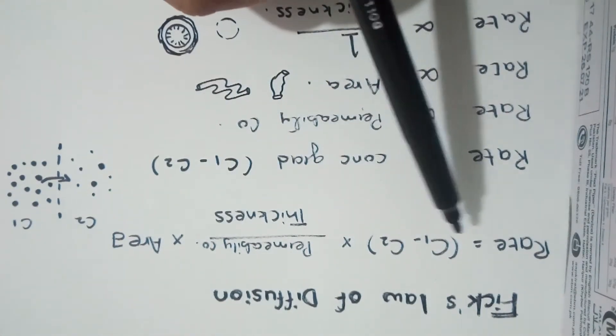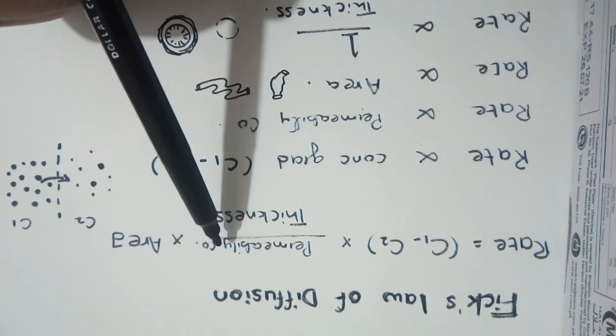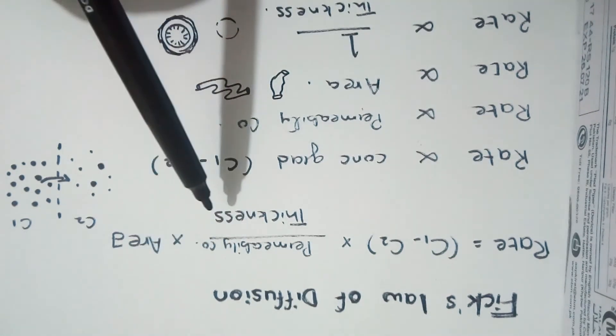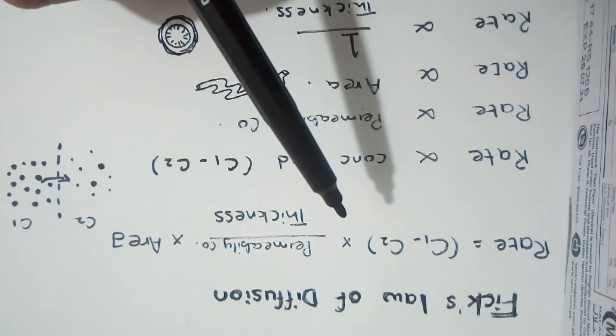The rate is directly proportional to concentration gradient, permeability coefficient, area, and inversely proportional to the thickness. That is how we calculate the rate.